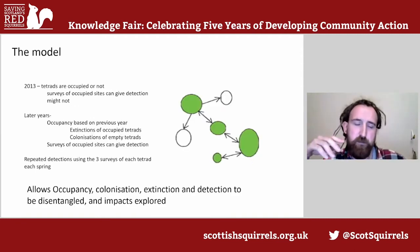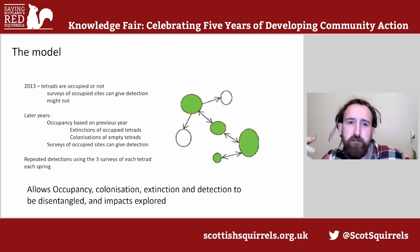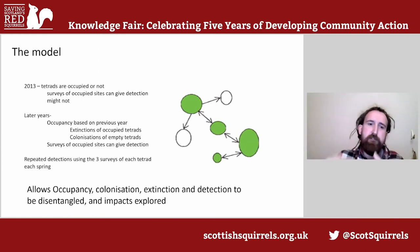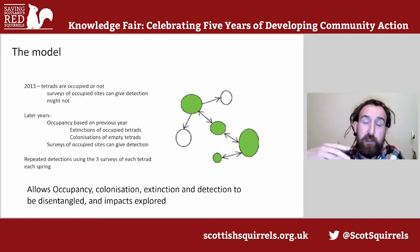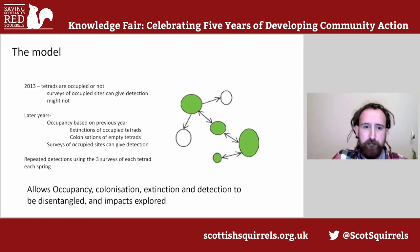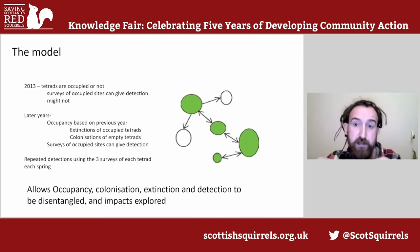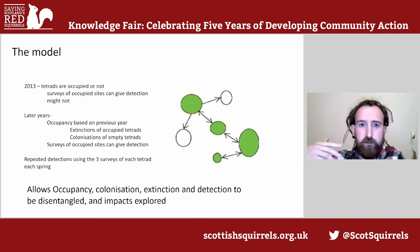The model itself: the spring survey started in 2013, so in 2013 sites were either occupied or not occupied by red or grey squirrels, and then they were surveyed. Sites that are occupied can either be detected or not. Then every following year, sites occupied in the previous year can go extinct, and sites that weren't occupied can be colonized. You have this detection process over the top trying to tell you where the squirrels are — it's imperfect. This allows you to estimate which sites are occupied, which are going extinct, which empty sites are being colonized, and how easy it is to detect squirrels when they are present.